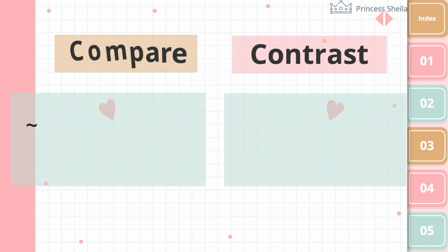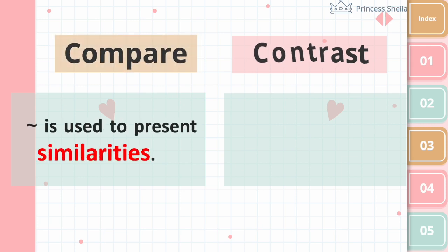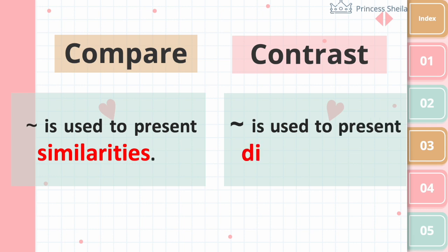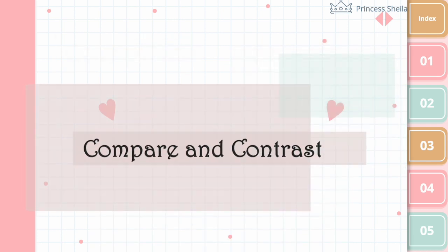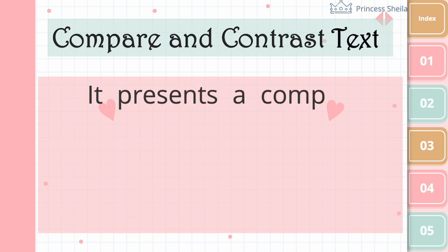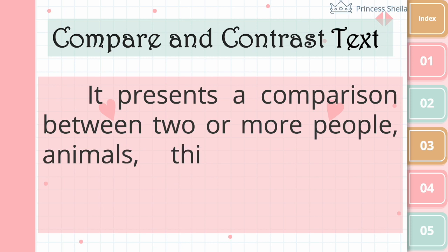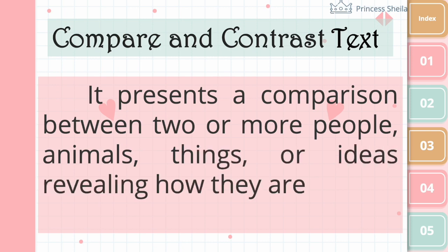Compare is used to present similarities, while contrast is used to present differences. So a compare and contrast text structure presents a comparison between two or more people, animals, things, or ideas, revealing how they are similar and how they are different.